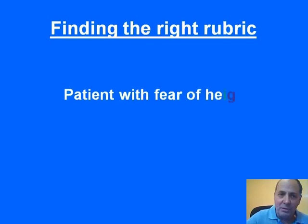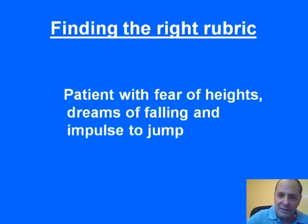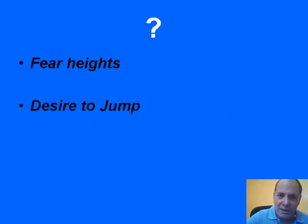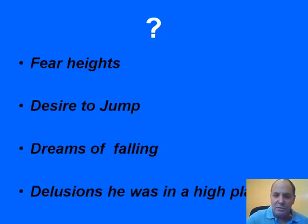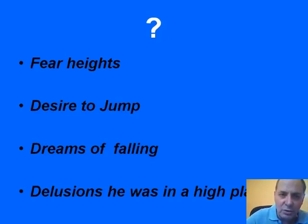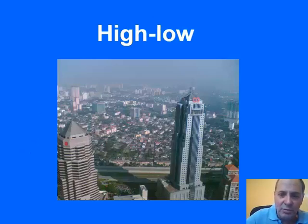Here's one last example: a patient with fear of heights, dreams of falling, and impulse to jump. Obviously, there are many issues here to do with heights, falling, and jumping. What will we take? The fear of heights, a desire to jump, the dreams of falling, or maybe even delusion of being in a high place. There are literally hundreds of possible rubrics that we can use. I've created a rubric called High and Low, which contains all these concepts of up and down, falling, heights, etc.